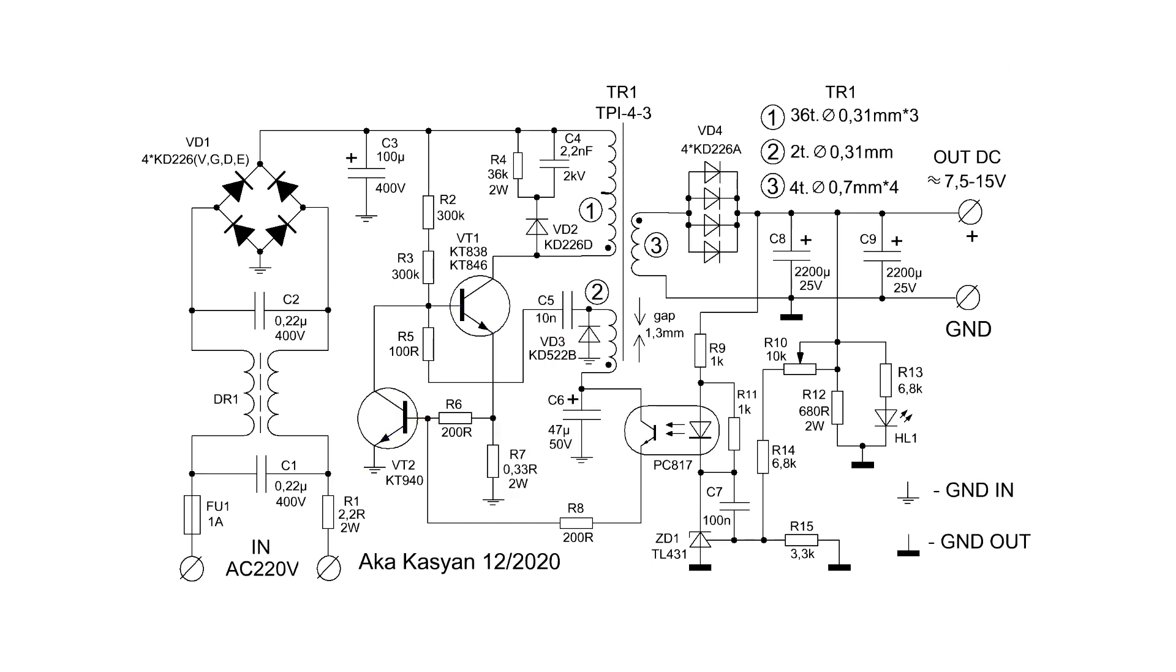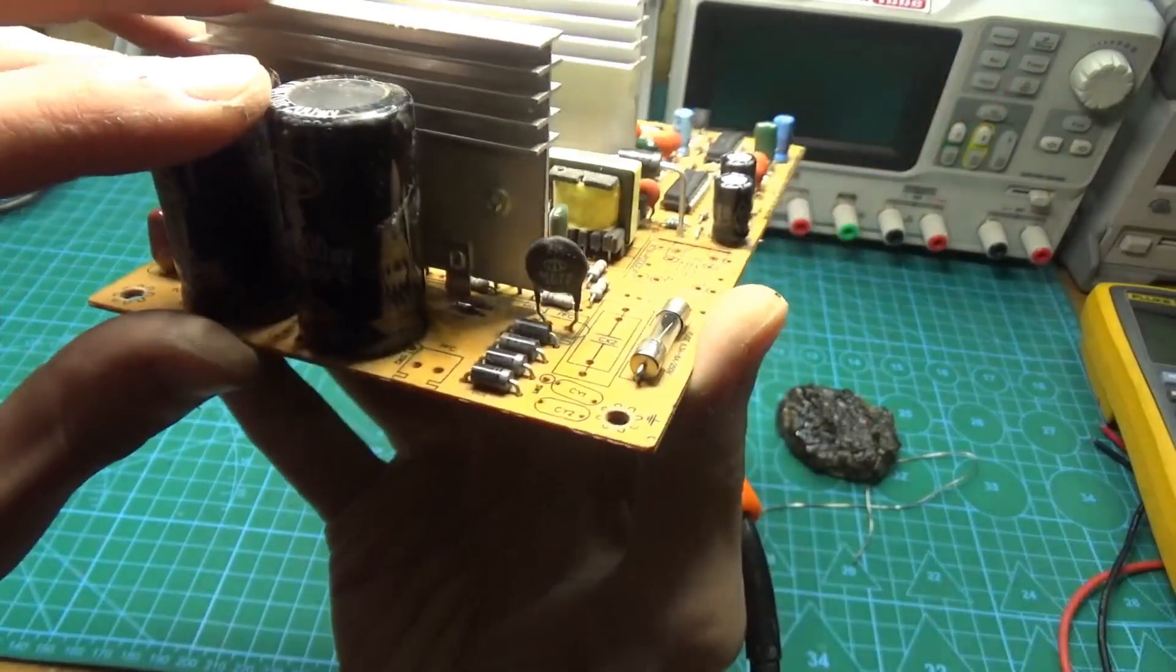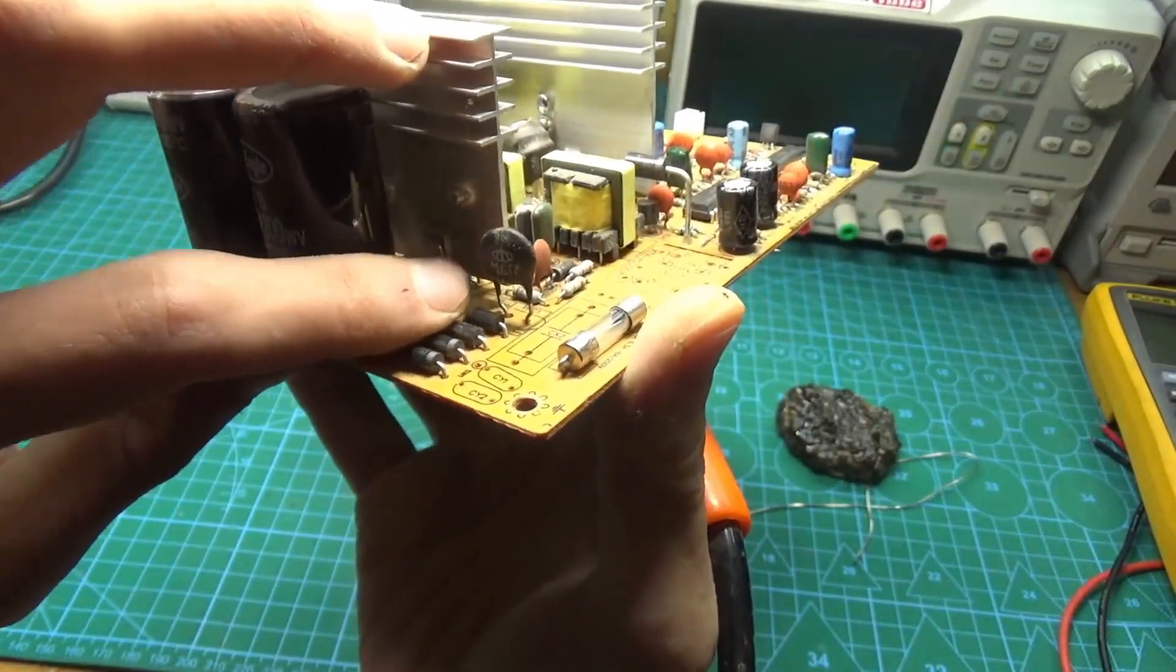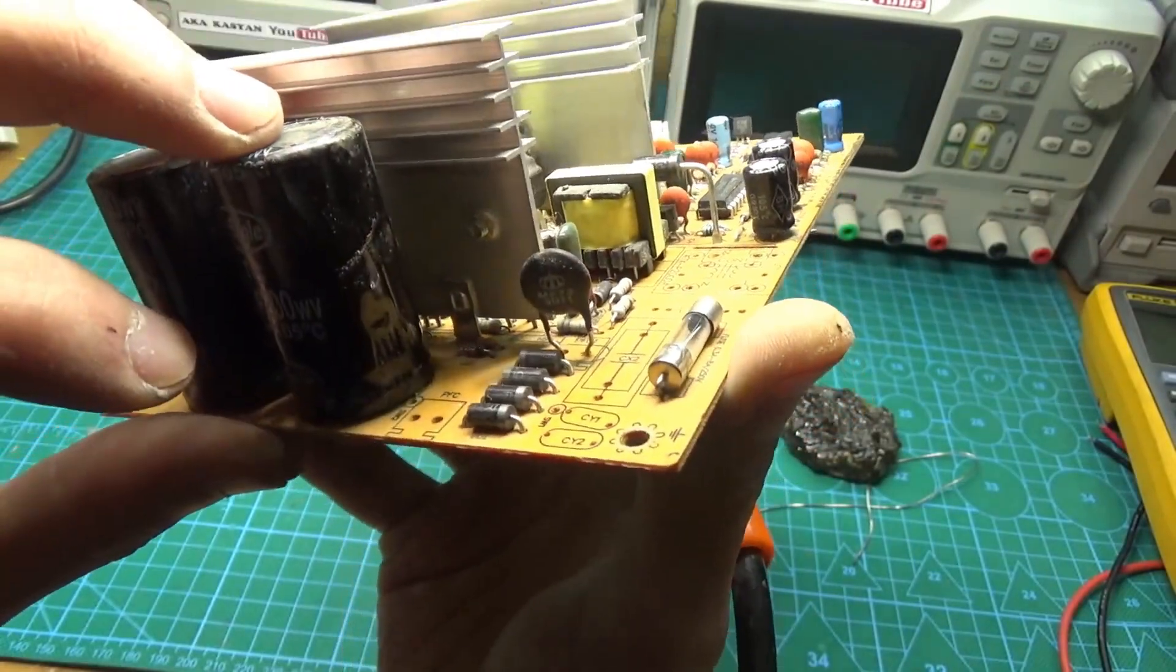Let's move on. This resistor acts as a current limiter for charging the input electrolytic capacitor. It is advisable to replace it with a low-resistance NTC thermistor, which can be taken from a non-working computer power supply or an imported television.